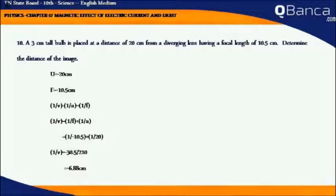1 by V equals 1 by F plus 1 by U, which equals 1 by minus 10.5 plus 1 by 20. 1 by V equals minus 30.5 by 210.